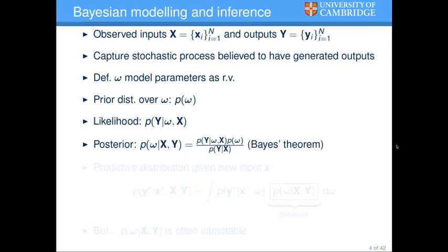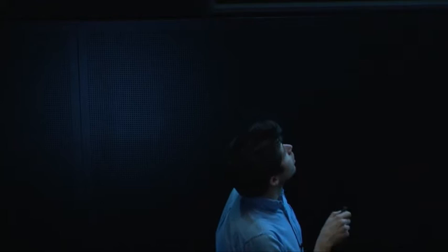Bayesian modeling is very simple. I'm going to give the basics so everyone is on even ground. In Bayesian modeling, we assume we have observed inputs X and corresponding outputs Y, and we assume there exists some stochastic process that generated our outputs given the inputs. Our task is to capture that stochastic process.